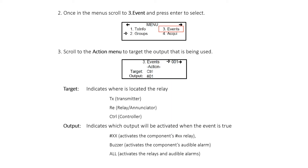Once in the menus, scroll to Menu 3, Event, and press Enter to select. Scroll to the Action menu to target the output that is being used.